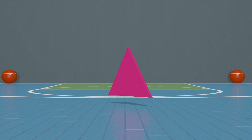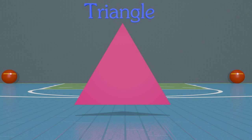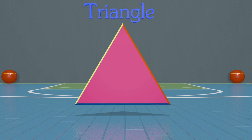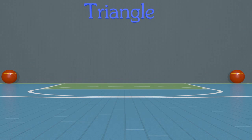Here we have a triangle, but what makes this shape a triangle? For a shape to be a triangle, it must have three sides and three angles. This shape has one, two, three sides. It has three sides, but does it have three angles? The angle is where two straight sides join together — sometimes the angles are called corners. We can see that this triangle has one, two, three angles. So this shape is a triangle because it has three sides and three angles.